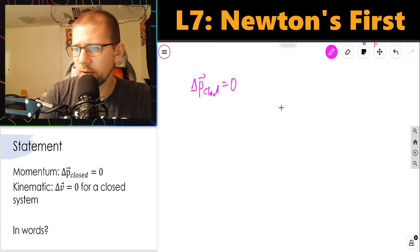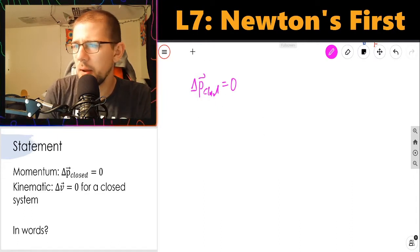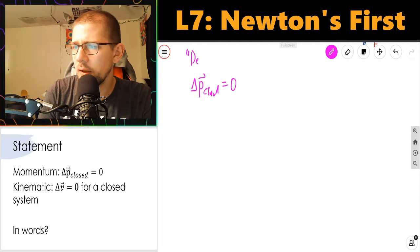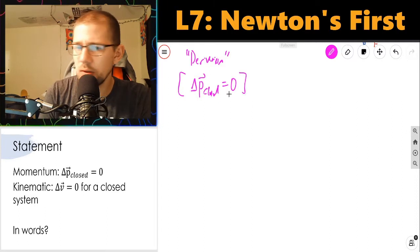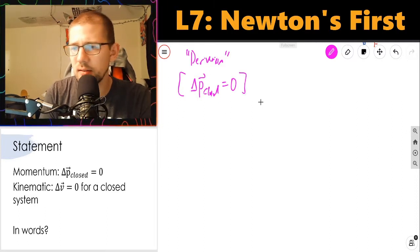Let's break that down. I'm going to do a mini derivation that shows us how we translate from this understanding, from momentum, to an understanding that the change in velocity must be zero.